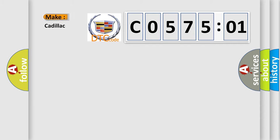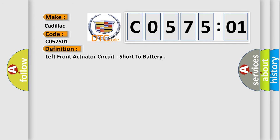The number itself does not make sense to us if we cannot assign information about what it actually expresses. So, what does the diagnostic trouble code C057501 interpret specifically for Cadillac car manufacturers? The basic definition is: Left front actuator circuit, short to battery.